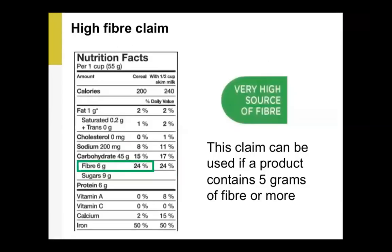Another helpful claim is the high fiber claim, which can be used if a product has at least five grams of fiber or more per serving. So looking at this cereal — six grams of fiber, which is 24% of daily recommended fiber — this could carry the 'very high source of fiber' claim. Looking at nutrition claims can be helpful to make a quick choice in the grocery store, especially during the COVID-19 pandemic when you want to minimize time spent in stores. You may also want to check out food labels online, as many grocery stores let you view nutrition information on various products online.